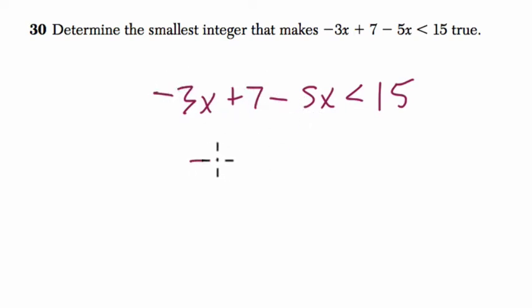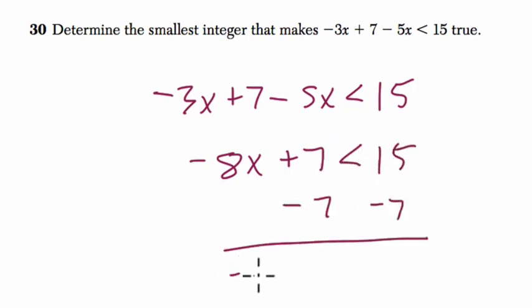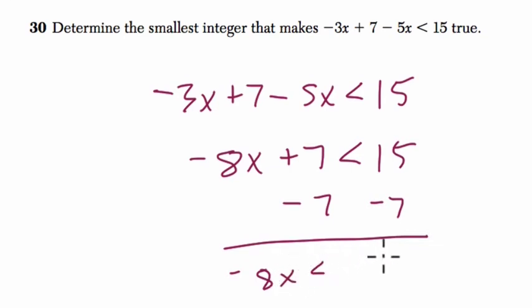Negative 3x minus 5x is negative 8x plus 7 less than 15. So to solve for x, I subtract 7 on both sides and negative 8x is less than 8.